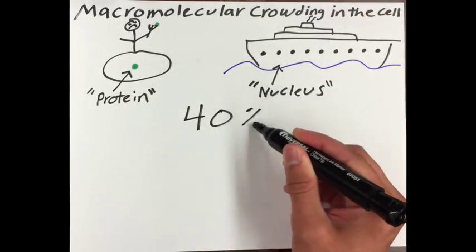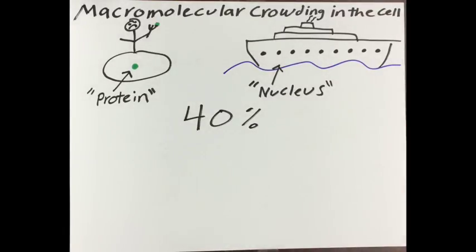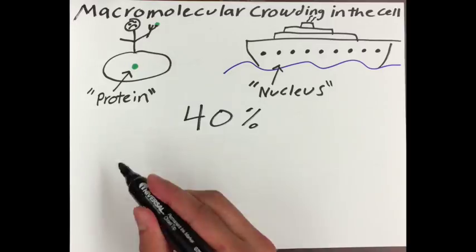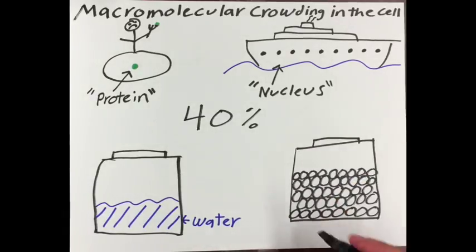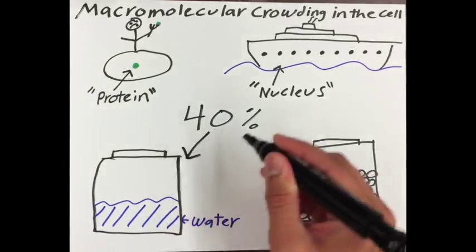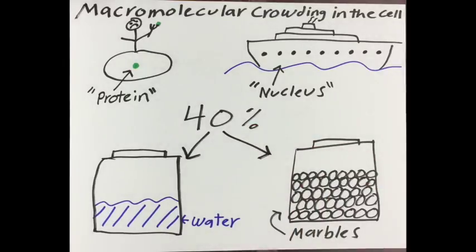There are some estimates that up to 40% of the mammalian cell volume is occupied by macromolecules. Now, this may not sound like a lot, but if we were to fill 40% of a mason jar's volume with marbles, the top of the marbles would actually be at about 60% of the jar's height.